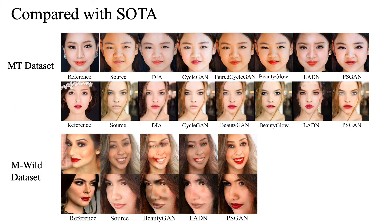The upper two rows show the comparison of PSGAN with other state-of-the-art methods on frontal faces in neutral expressions. Our method is one of the best. The latter two rows show the comparison on the M-Wild dataset. Since the current methods lack an explicit mechanism to guide the direction of makeup transfer, the makeup is applied in the wrong region of the face when dealing with images with different poses and expressions.